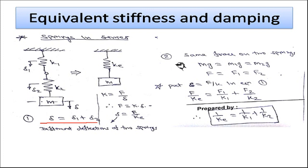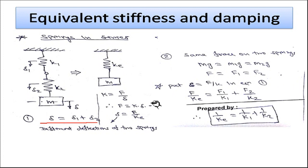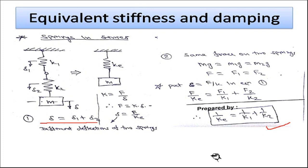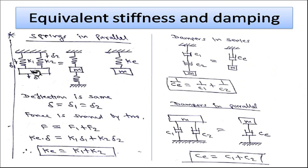The same force acts on springs k₁ and k₂ in series, equal to m·g. Writing δ = F/k into the equation, we get F/kₑ = F₁/k₁ + F₂/k₂. Since F₁ = F₂ = F, the force cancels, giving 1/kₑ = 1/k₁ + 1/k₂. This is the formula for equivalent stiffness of two springs in series.